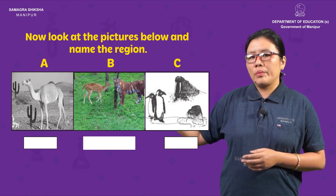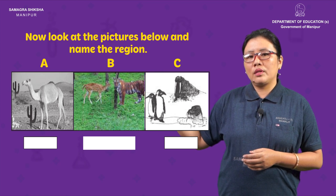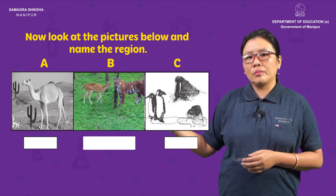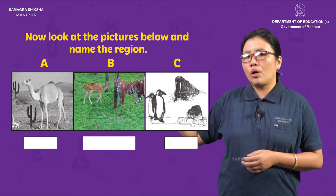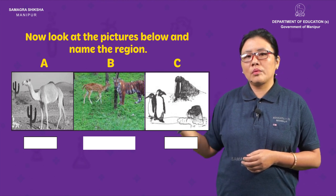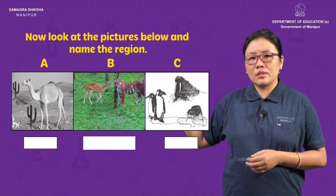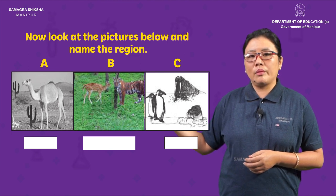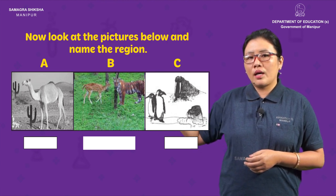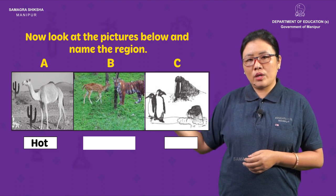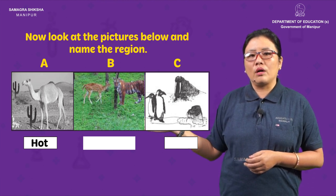The camel lives in the desert. The hot region is the desert. The cactus also lives in the hot region.